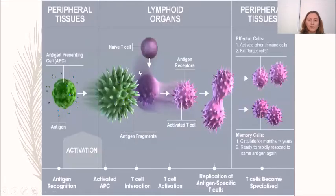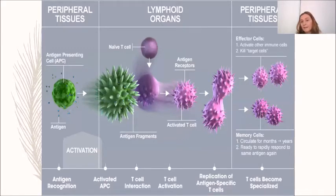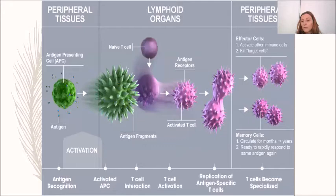After antigen presentation, the T cell activates, proliferates, and becomes effector cells or memory cells. Effector cells eliminate target cells, while memory cells circulate for months or years and are able to respond to subsequent encounters with the same antigen.